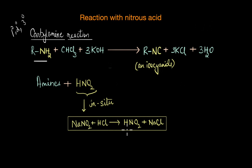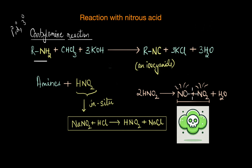NaNO2 plus HCl gives HNO2 and NaCl. We have to prepare nitrous acid in situ because of its instability and highly reactive nature. HNO2 is unstable and decomposes quickly in aqueous solution, especially at room temperature or higher temperatures, breaking down into nitric oxide and nitrogen dioxide — both highly toxic gases. This is why it is not practical to store or use pre-prepared nitrous acid, as the decomposition products NO and NO2 are hazardous to handle.